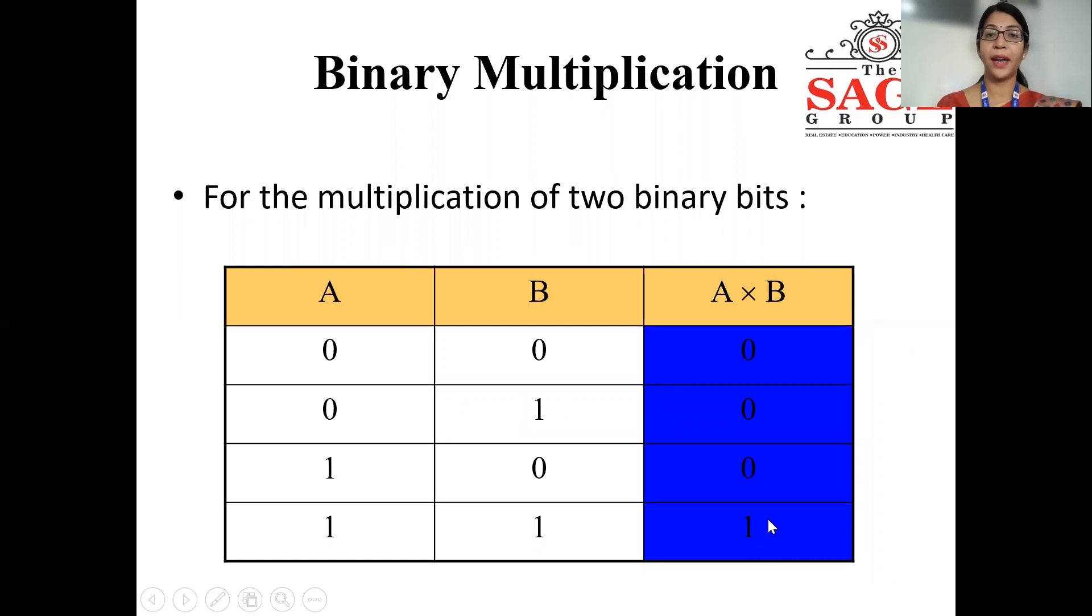Third operation is binary multiplication. For the multiplication of two binary bits, 0 into 0, as a result you will get 0. 0 into 1 is 0. 1 into 0 is 0. And 1 into 1 will be 1.